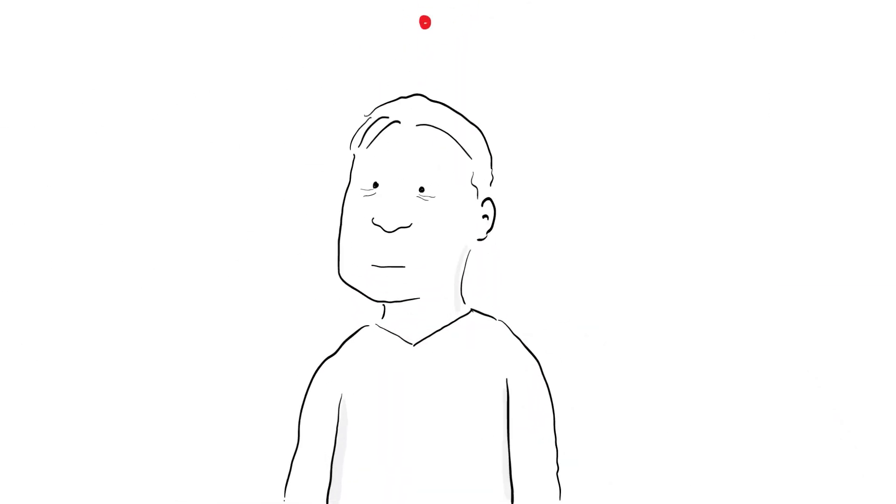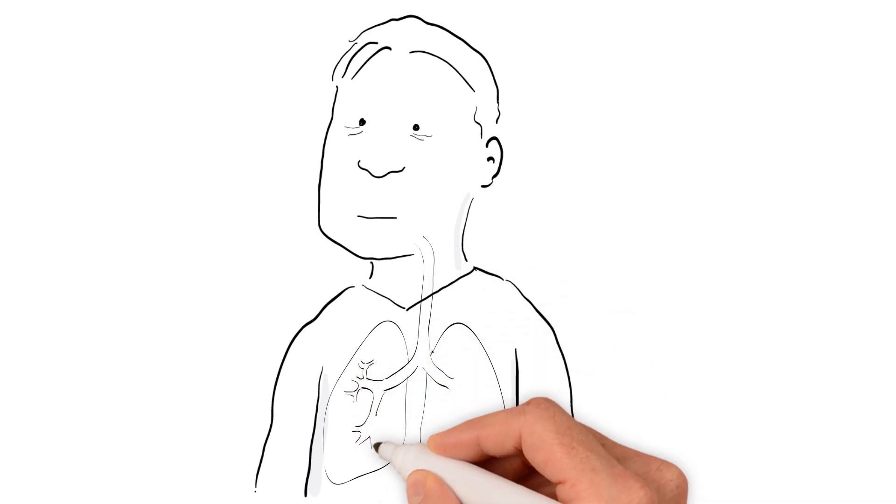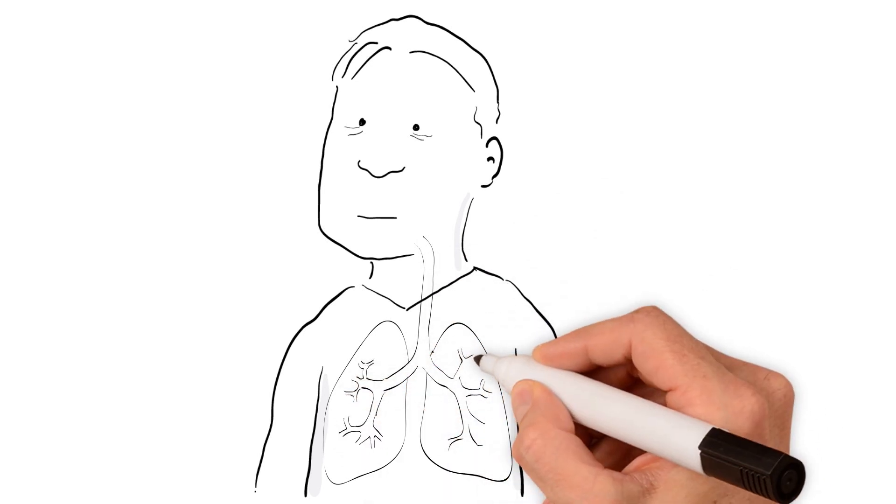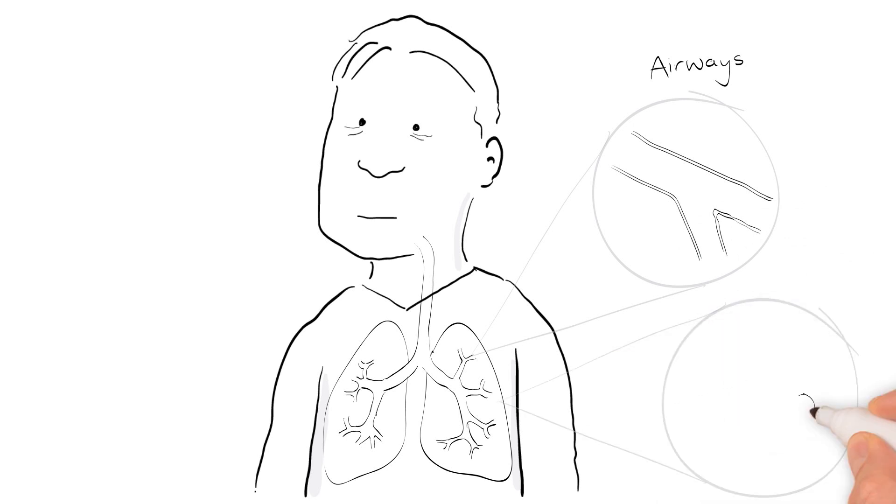But what exactly is COPD? First, let's see how the lungs work. The lungs are a spongy network of airways and air sacs. When we breathe in, air travels down branching airways, which become smaller and smaller, ending up in tiny air sacs.